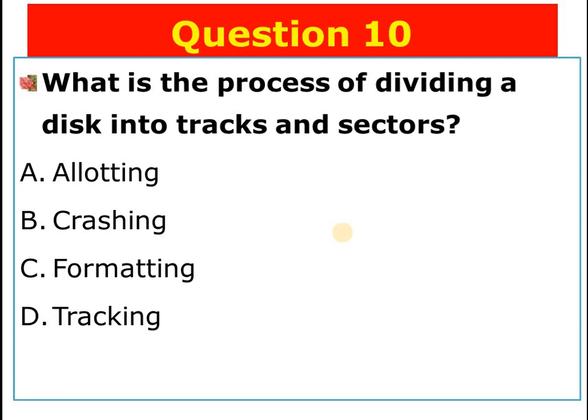Question number ten: What is the process of dividing a disk into tracks and sectors called? A) Allotting, B) Crashing, C) Formatting, D) Tracking. The answer is C — formatting.